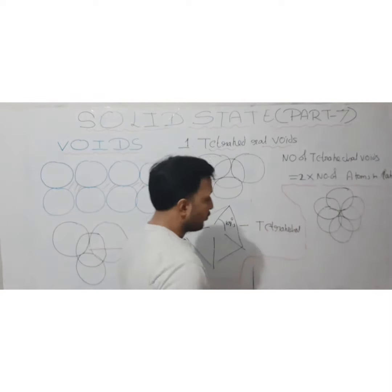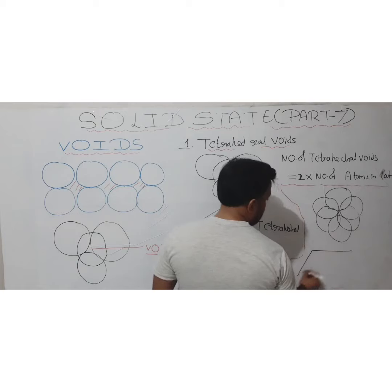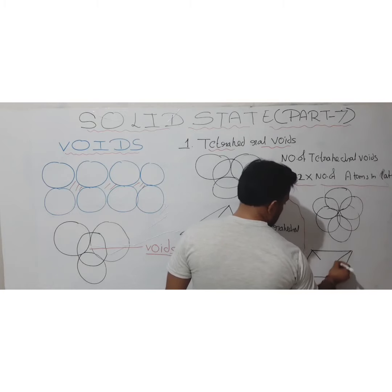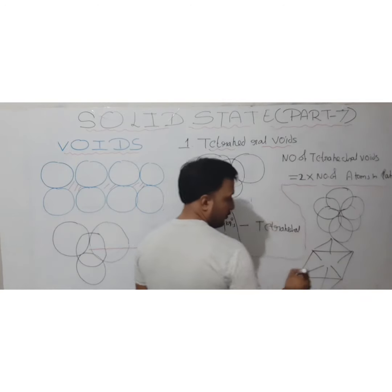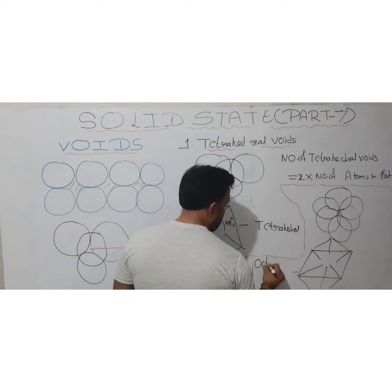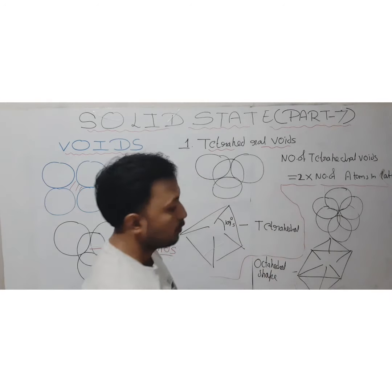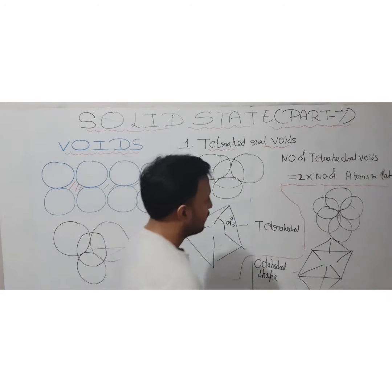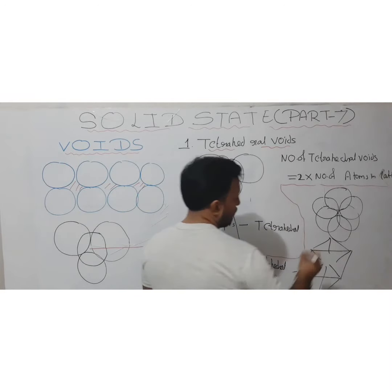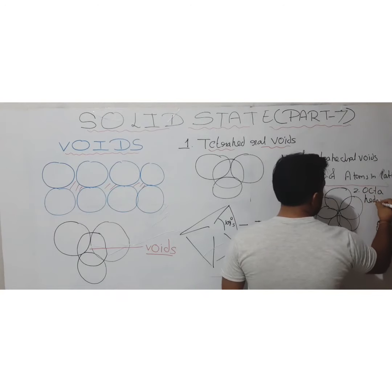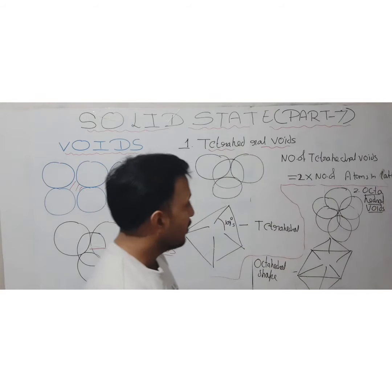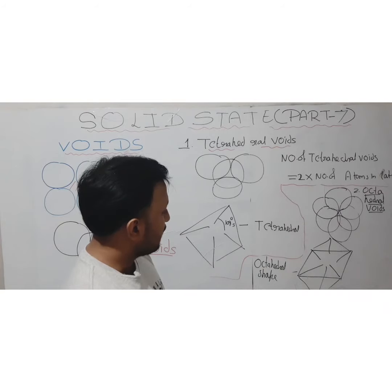When the empty void is covered by 6 spheres, the shape generated is the octahedral shape — which you have studied in grade 11 when discussing different types of shapes. So the second type of void formed is known as the octahedral void.